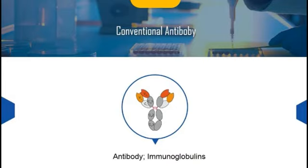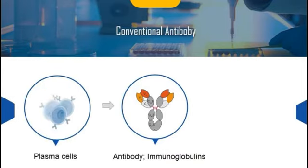Before we begin to introduce recombinant antibody, we'd better talk about conventional antibody. Antibody is known as immunoglobulins. They are generally Y-shaped. Antibodies are peptide molecules secreted by B cells, mostly by differentiated B cells called plasma cells. Basically, the function of antibodies is to control and stop pathogens, and to assist in an immune response. They can protect us against infection and intoxication by mechanisms of antibody functionality, such as antagonism, agonism, or cell killing via ADCC, etc.